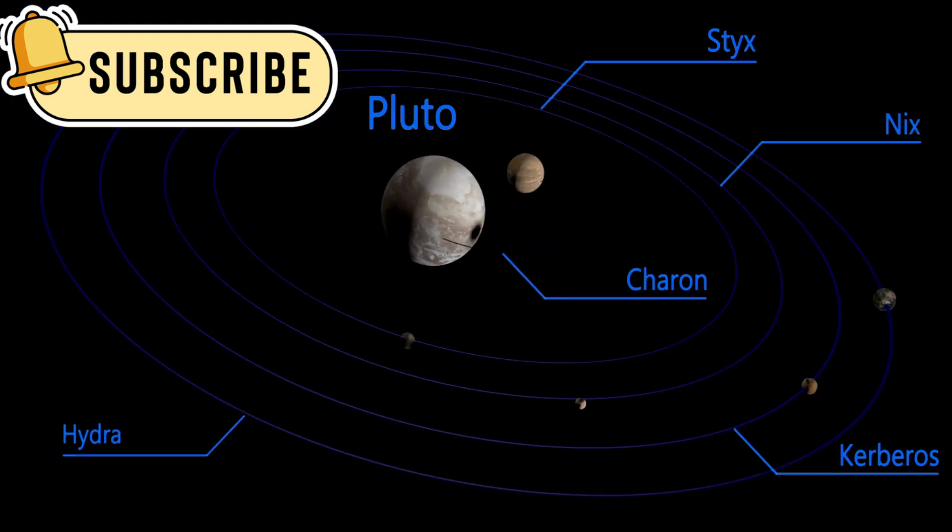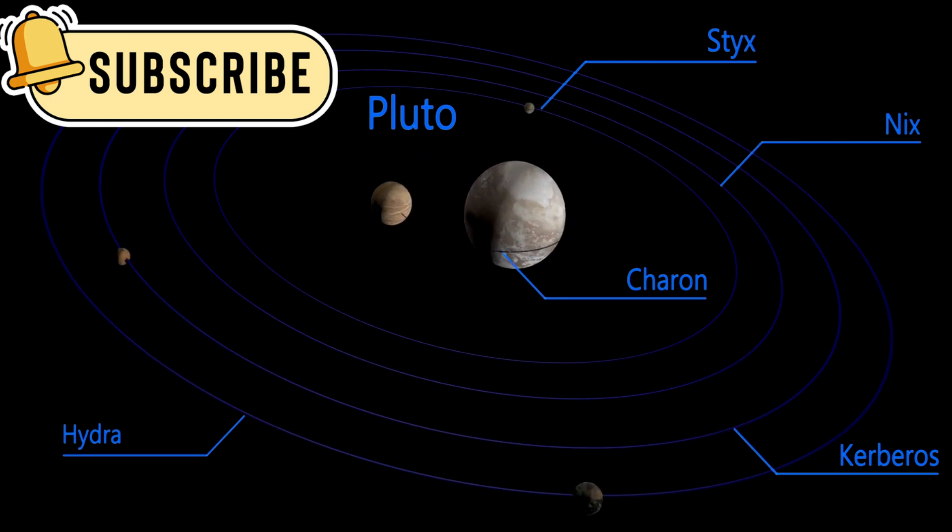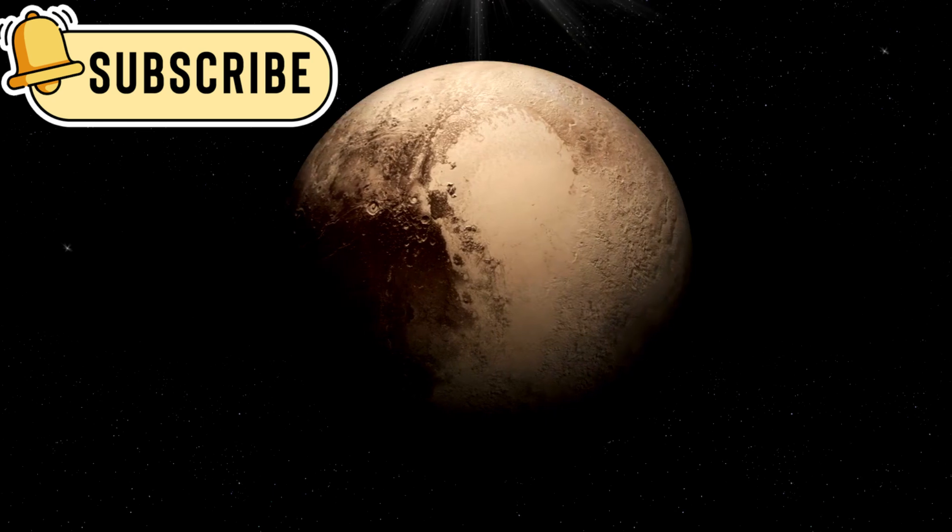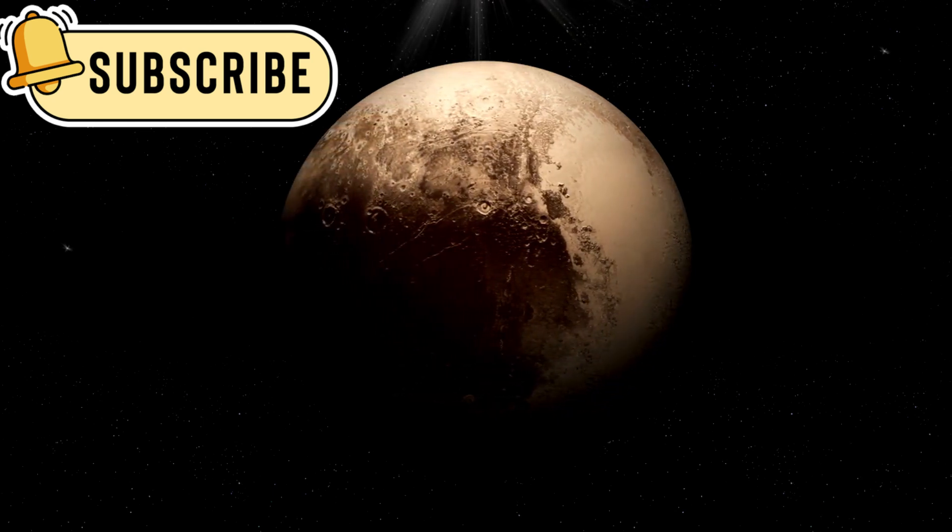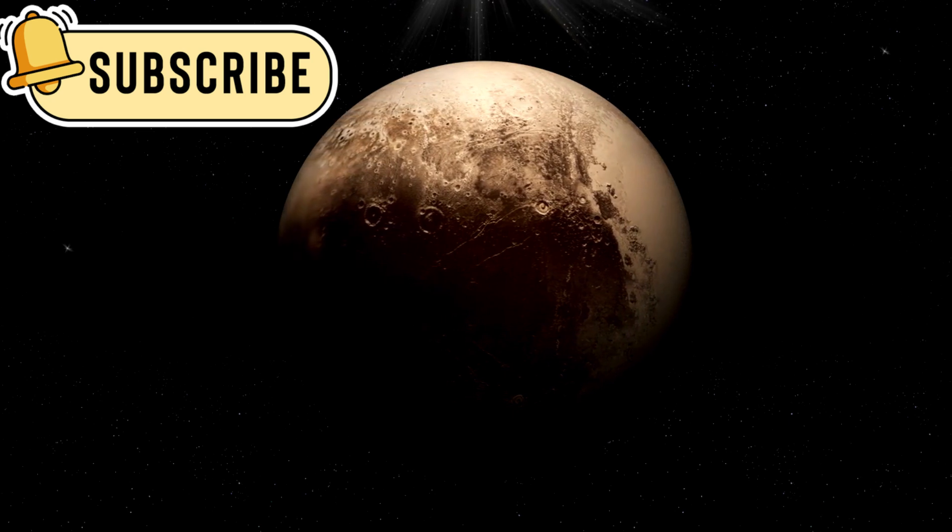However, Pluto's orbit is not just slow, it's also highly elliptical, unlike the more circular orbits of the larger planets. Moreover, Pluto's orbit is tilted at an angle of 17 degrees, making its path far more extreme compared to the other planets.